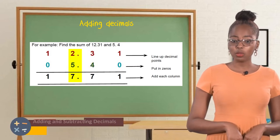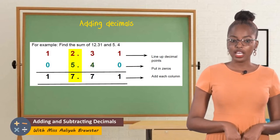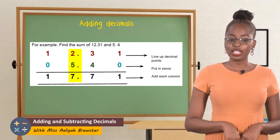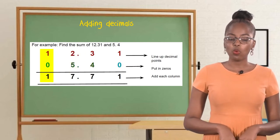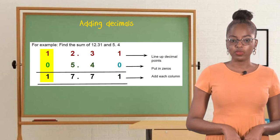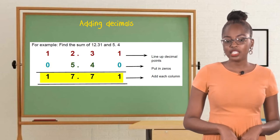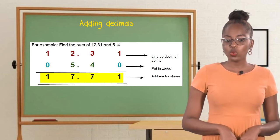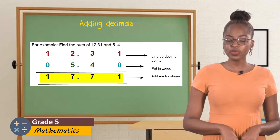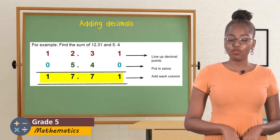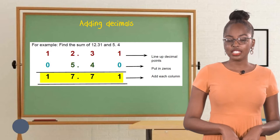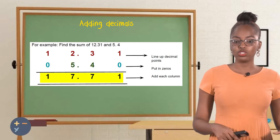Then of course we write back the point. And then we add two plus five — we'll get seven. And then we add one plus zero — we'll get one. Therefore, the answer for twelve and thirty-one hundredths plus five and four-tenths would be seventeen and seventy-one hundredths.